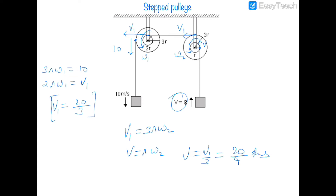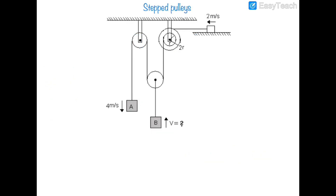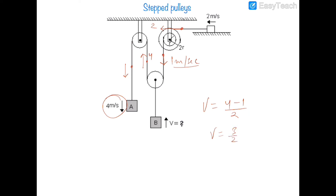The velocity of that block is 20/9 meters per second. In the next problem, a point is moving towards the left with velocity 2 m/s, so due to pulley rotation, a corresponding point moves downward with velocity 1 m/s. Another side moves upward at 4 m/s. The net velocity v = (4 − 1) / 2 = 3/2 = 1.5 meters per second.